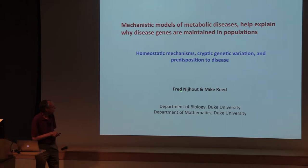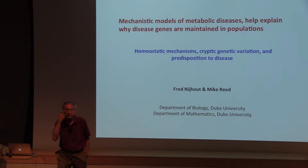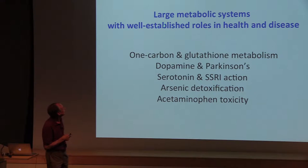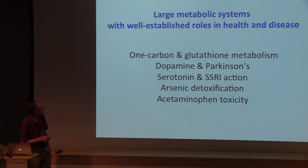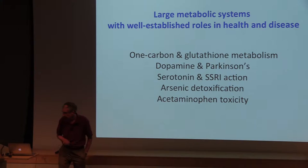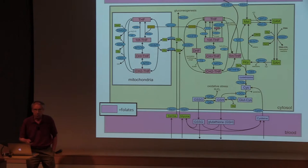So here's my title. It comes with a subtitle, and it's really work that I and my friend and colleague Mike Reed in our mathematics department have been doing for about the last 15 years. We and about a dozen collaborators have been working on what we call large metabolic systems with well-established roles in health and disease. We've done a lot of work on one-carbon and glutathione metabolism, dopamine and Parkinson's, serotonin and how SSRIs really work, arsenic detoxification, and acetaminophen toxicity. I will spend most of my time today working on this first topic.